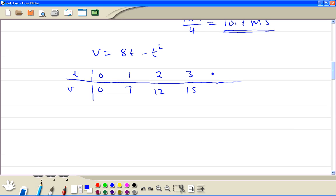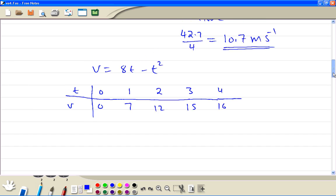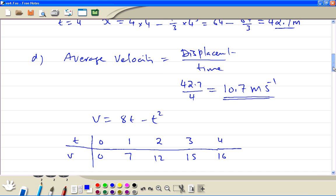Then when t is 4, 32 minus 16. So the velocity is positive in the first four seconds, so therefore this answer is correct.